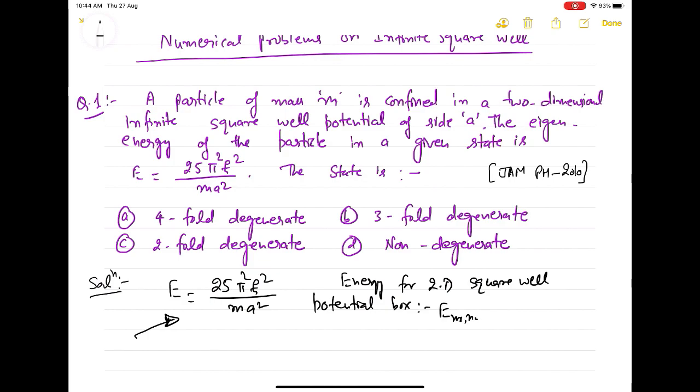expression for the energy for two-dimensional square wall potential box is E_nx,ny is actually equal to π²ℏ²/(2ma²) times (nx² + ny²). This is the standard result that we get from the derivation for two-dimensional square well potential, and this has been given equal to 25π²ℏ²/(ma²). If we compare both the relations, if we put one equal to two, we get that nx² + ny² is nothing but 50.